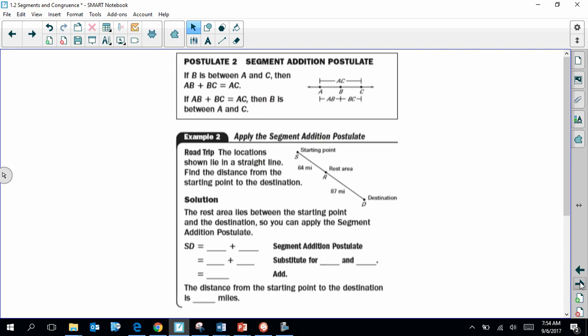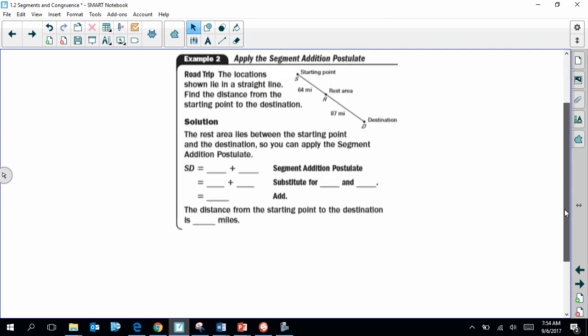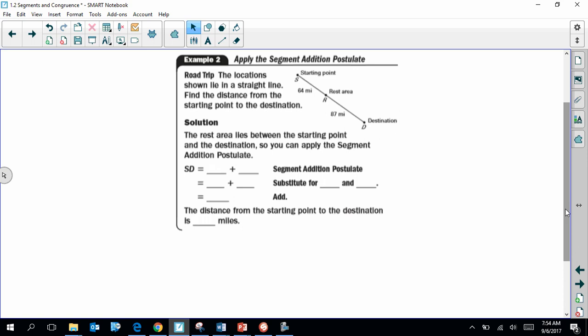Here's our second postulate. This is another statement I can accept to be true. It's a segment addition postulate that simply says if I have two smaller segments and I combine them together, I add their lengths to make a longer segment. And what we're going to be seeing here in the example is we have two segments, SR and RD, and they're being combined to make one long segment, SD. So if I want to know how long SD is, according to the segment postulate, all I have to do is add the two segments together. So I substitute their values and say that the segment length SD is 151 miles long in this case.